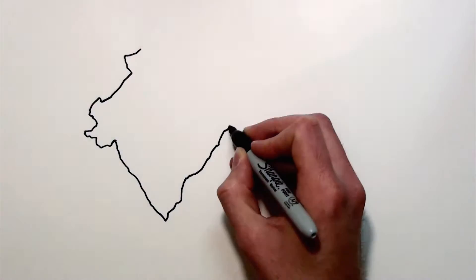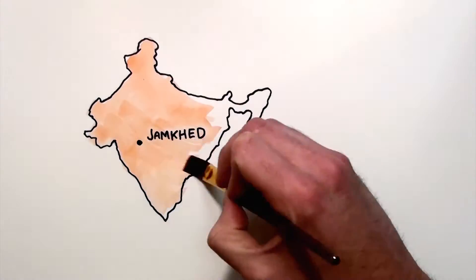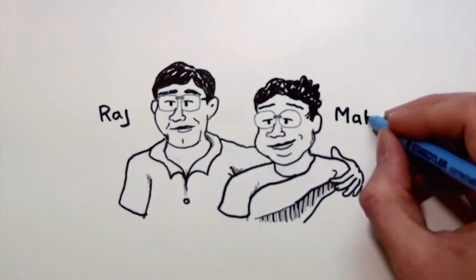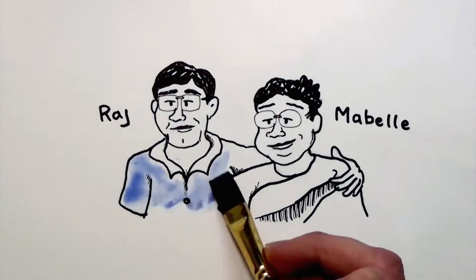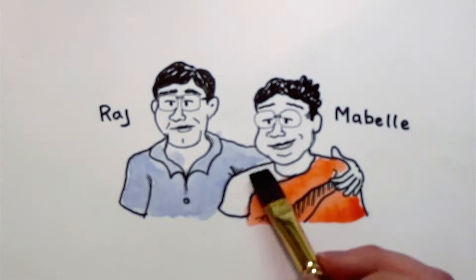For example, consider an experience in Jamket, India. In the early 1970s, two Indian physicians, Raj and Mabel Aroli, decided that they wanted to empower the poorest in India to improve their own health.